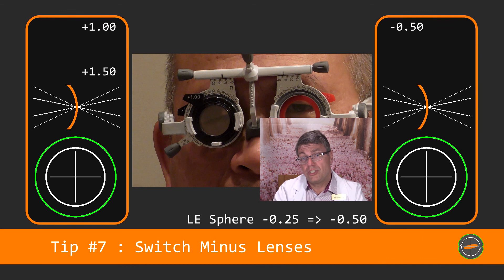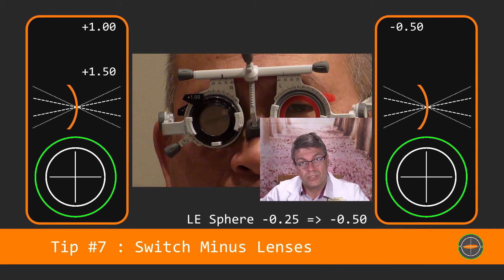As you can see changing minus lenses is totally different to changing plus lenses. Minus lenses are switched. Otherwise you'll induce accommodation. This is the opposite to plus lenses which are shuffled if you remember.